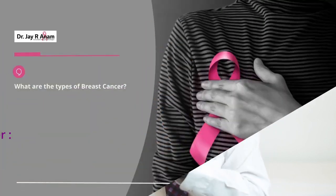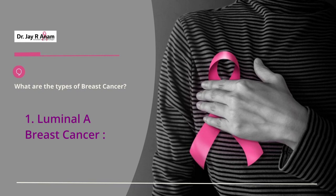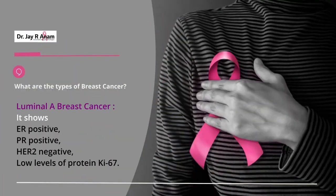The first type is the Luminal A type. Luminal A cancers show a strong presence of ER receptors and a strong presence of PR receptors. They do not show HER2-neu receptors, and the KI67 index is very low, meaning the number of tumor cells multiplying is very small.